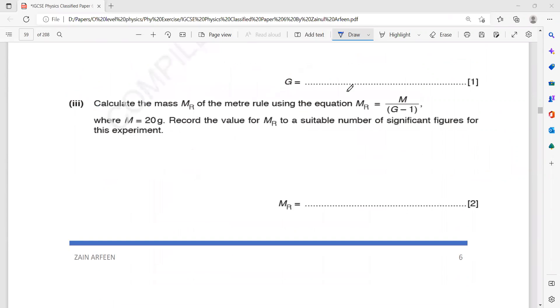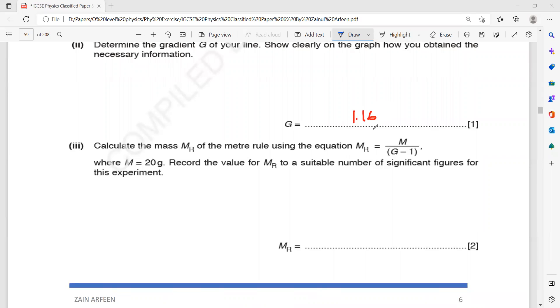Then the next part, as I mentioned for paper six, you don't have to memorize any formula. Then calculate the mass of the meter rule and use this equation. Mr equals m divided by g minus 1. And what is m? m is 20. This will be 20 divided by 1.16 minus 1. So this will be 20 divided by 0.16. 20 divided by 0.16 equals 125. So 125 gram. And that is logical. A meter rule has a mass about 100 to 300 gram on average. Even the range of answer in the marking scheme is about 100 to 400. So again, you don't have to memorize any formula for paper six.